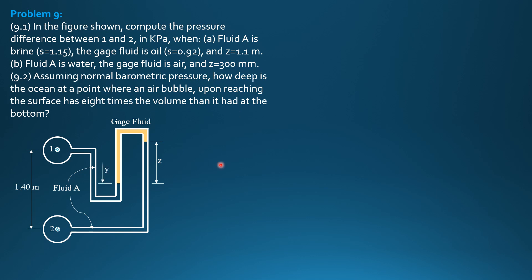So, for the first part, let's call this Y because this is not known. So, we sum up pressure from 1 down to 2 by passing these intervening passages here. And, therefore,